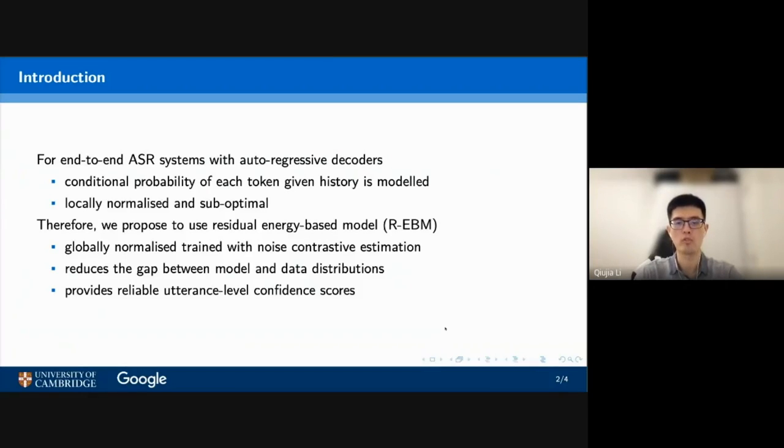Therefore, we propose to use residual energy-based model (R-EBM), which is globally normalized and is trained with noise contrastive estimation. R-EBM reduces the gap between model and data distributions. In the meantime, it provides reliable utterance-level confidence scores.